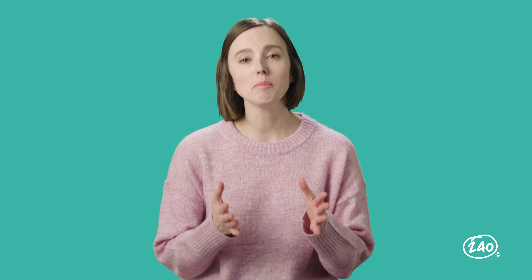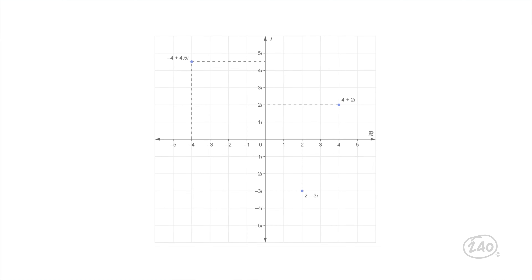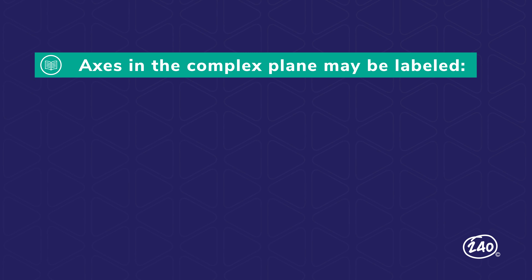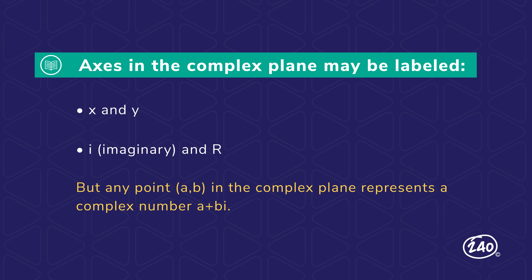Let's begin our adventure with complex numbers in a complex plane. The complex plane is identical to your typical x-y coordinate plane. The horizontal axis is called the real axis, and the vertical axis is the imaginary axis. The real part of a complex number is graphed on the horizontal axis, and the imaginary part is graphed on the vertical axis. For example, 2-3i would be graphed as a point. On tests, the axes in the complex plane may be labeled x and y, or i and r, but any point (a, b) in the complex plane represents a complex number a plus bi.